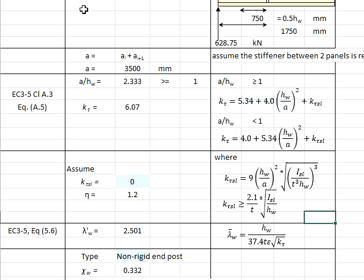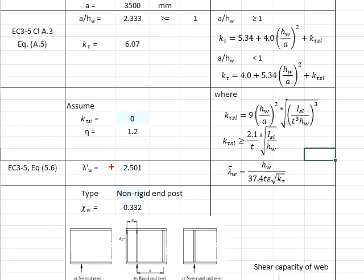Then we go back to Table 5.1 in EC3 Part 5 and obtain chi_w equals to 0.332.